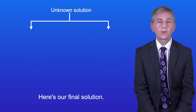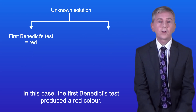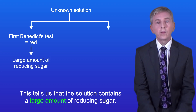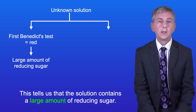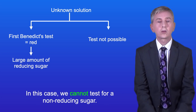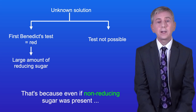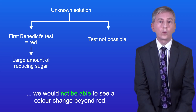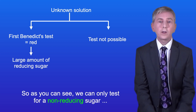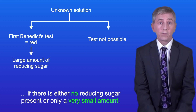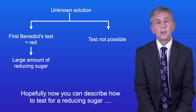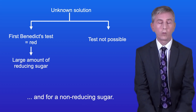For a final example, if the first Benedict's test produces a red colour, the solution contains a large amount of reducing sugar. In this case we cannot test for a non-reducing sugar, because even if one were present we would not be able to see a colour change beyond red. So we can only test for a non-reducing sugar if there's either no reducing sugar present or only a very small amount. Hopefully you can now describe how to test for reducing and non-reducing sugars.